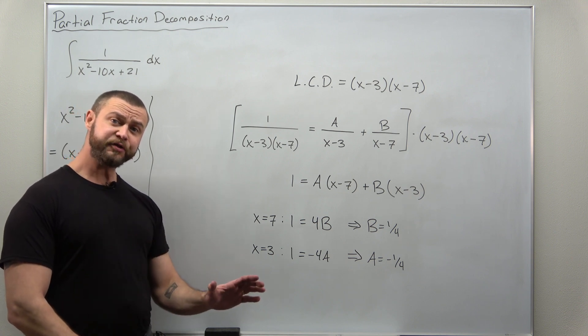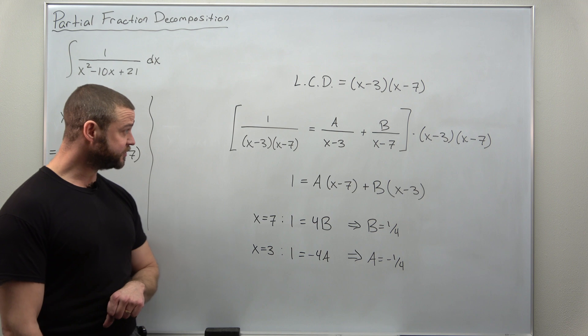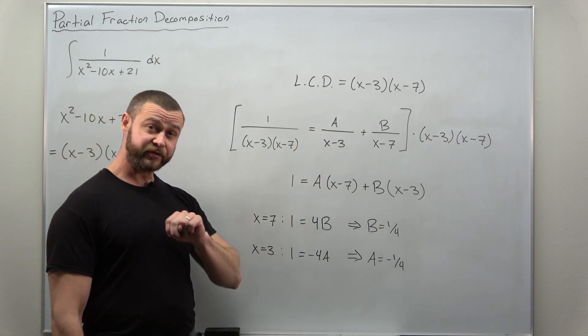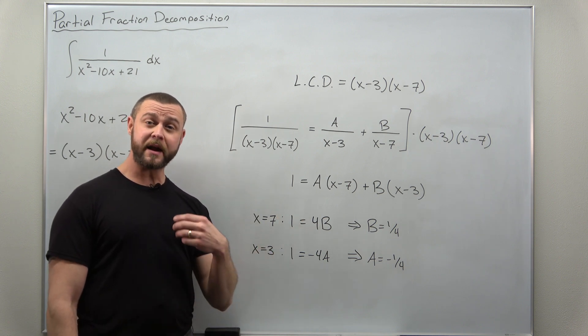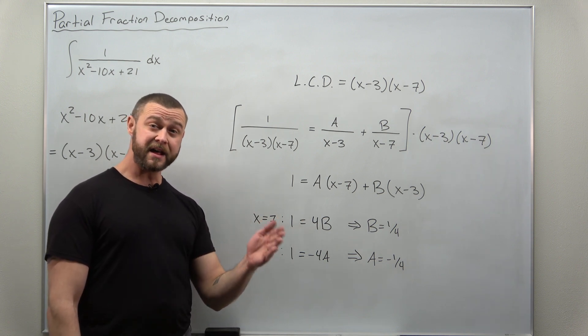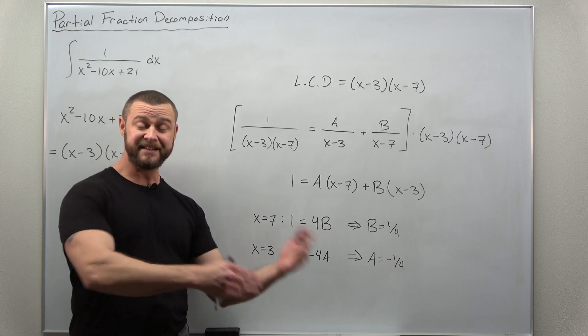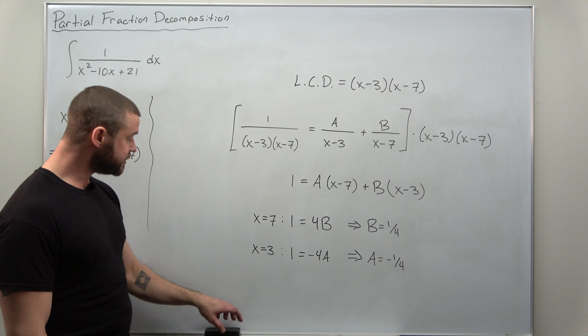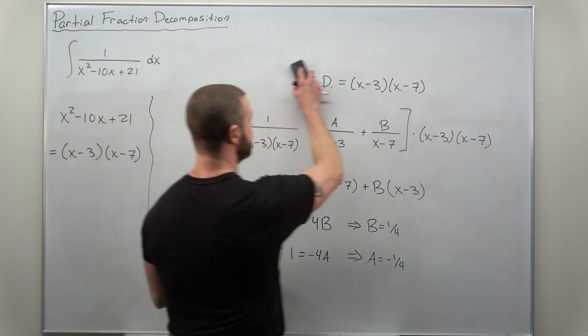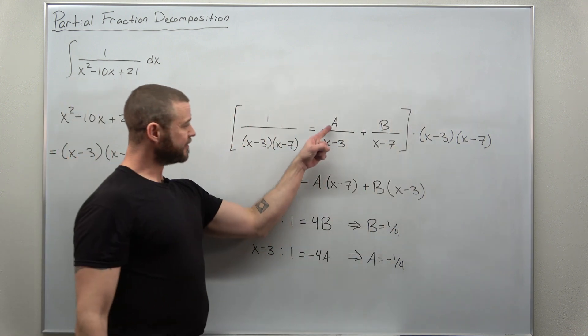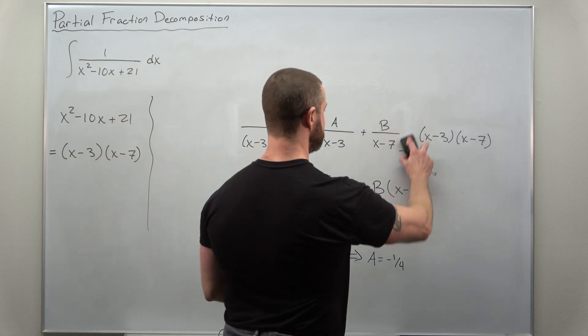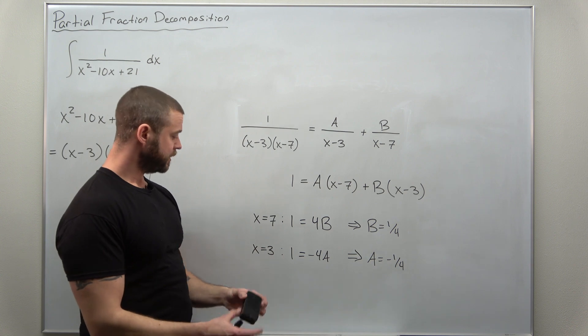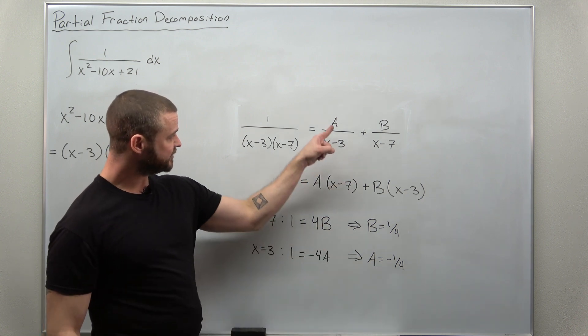Now this is most of your work in a partial fraction decomposition, solving for the values of your constants. Here we have two, A and B. In other examples you might have more, maybe A, B, C, and D or beyond. But this is most of the work for our question. We just need to plug in our values of A and B to our partial fraction decomposition. So we found the value of A as negative 1 fourth.